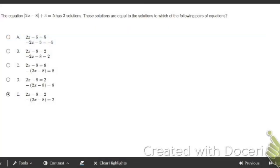Alright, number 40 says the equation 2x minus 8 plus 3 equals 5 has two solutions. Those solutions are equal to the solutions to which of the following pairs of equations?